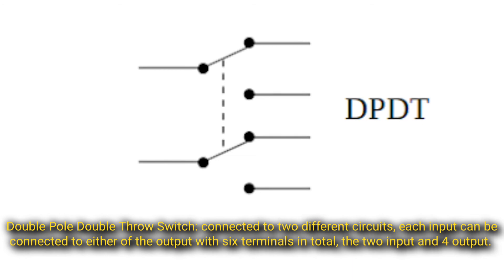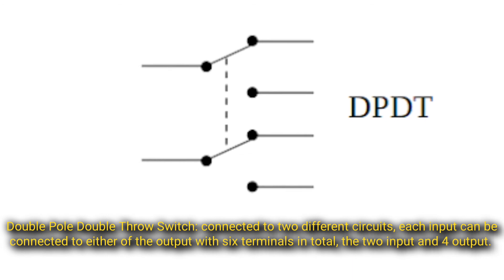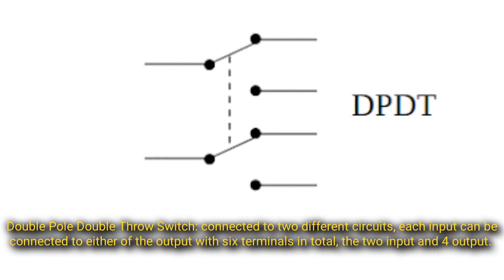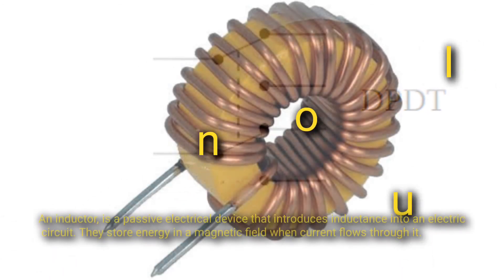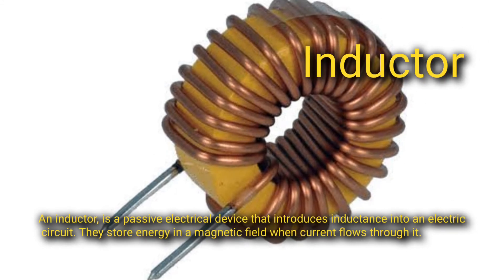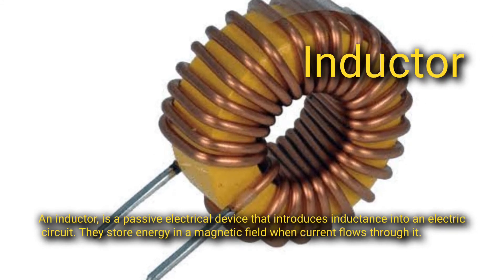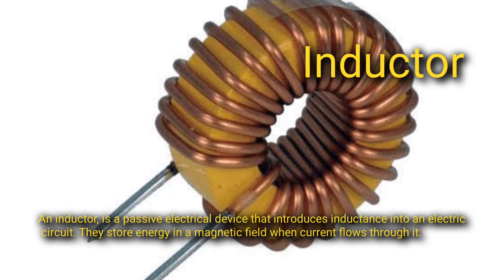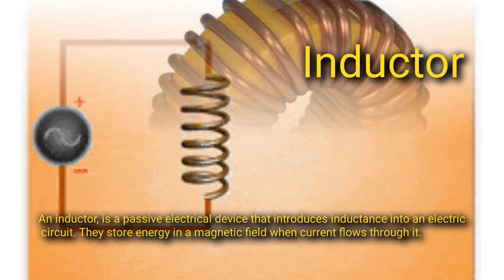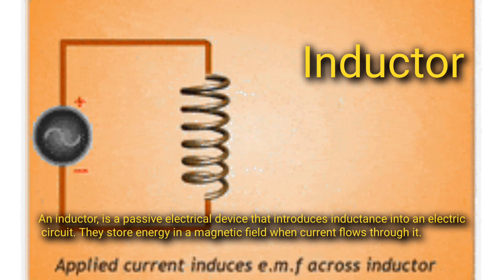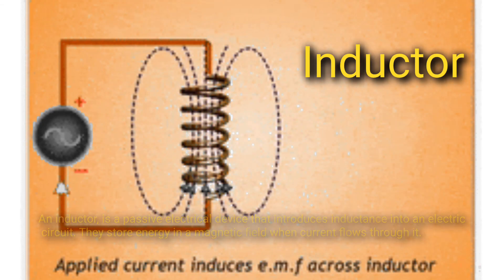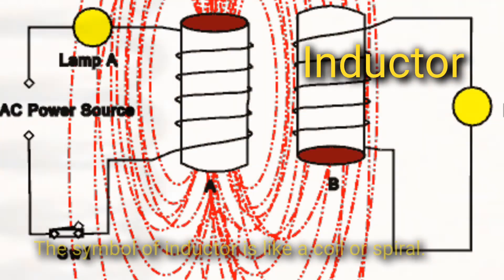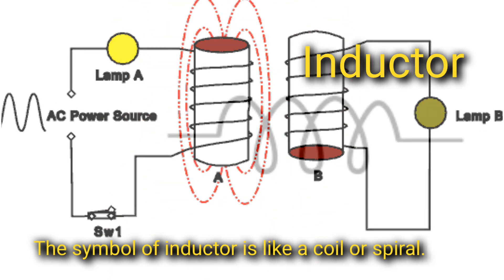Double Pole Double Throw (DPDT) switch is connected to two different circuits; each input can be connected to either of the outputs, with six terminals in total — two inputs and four outputs. Inductor: an inductor is a passive electrical device that introduces inductance into an electric circuit, storing energy in a magnetic field when current flows through it. The symbol of an inductor is like a coil or spiral.